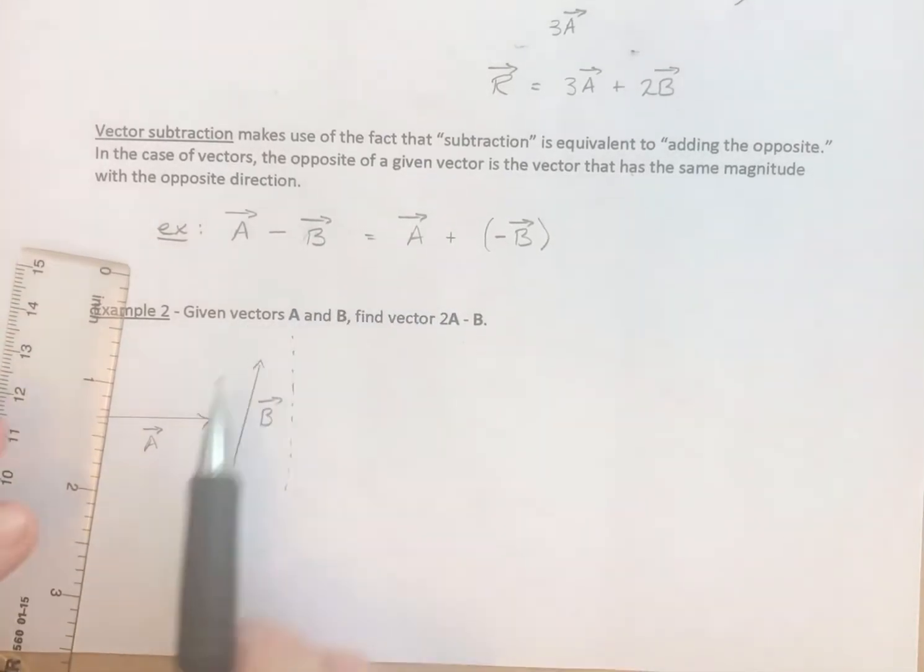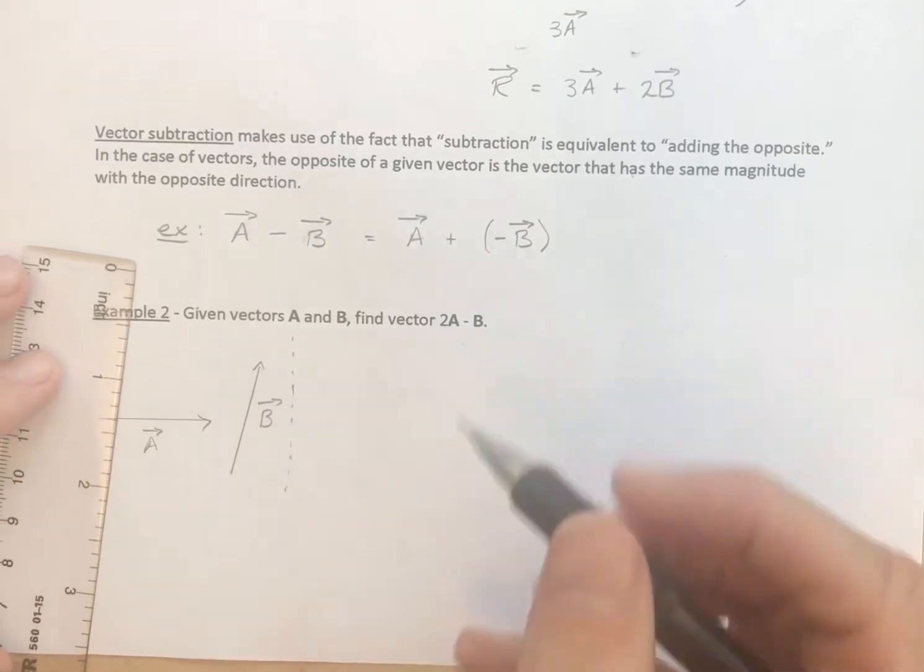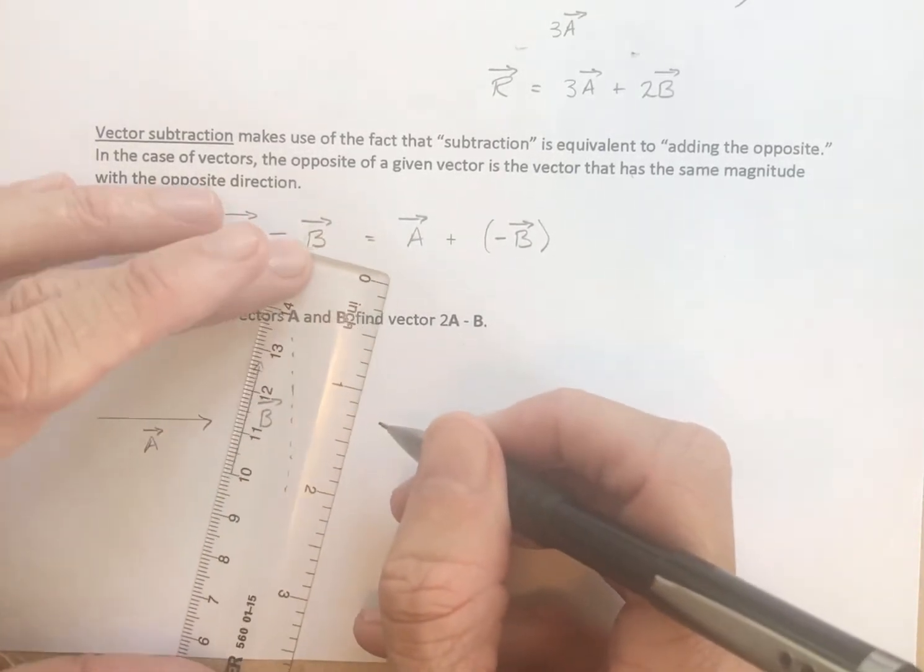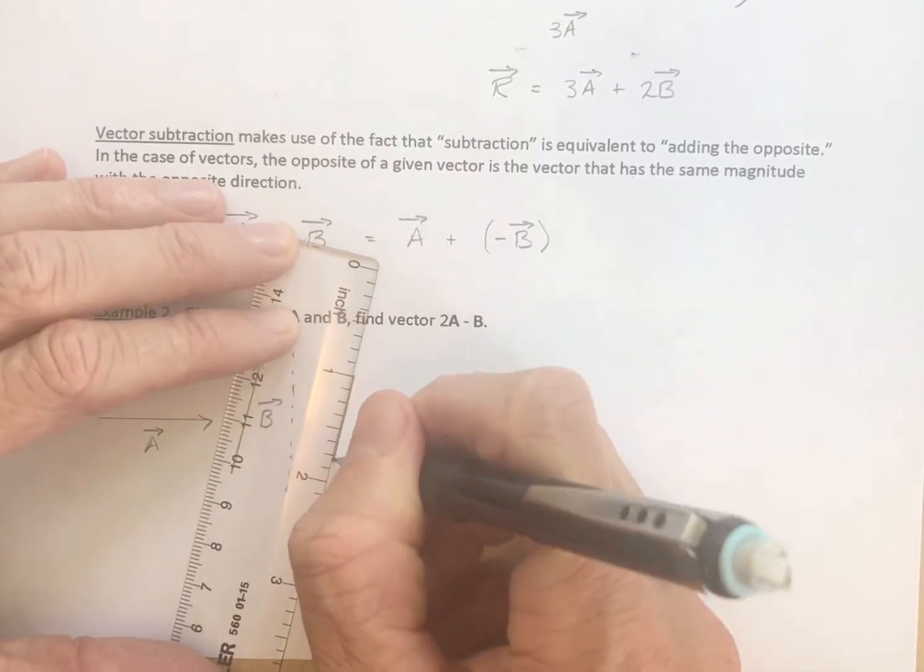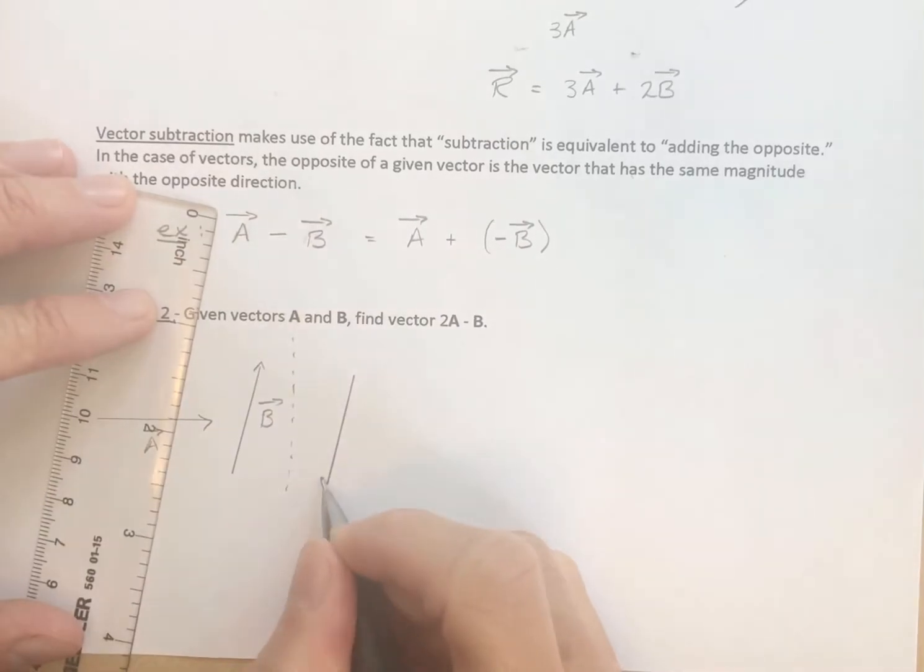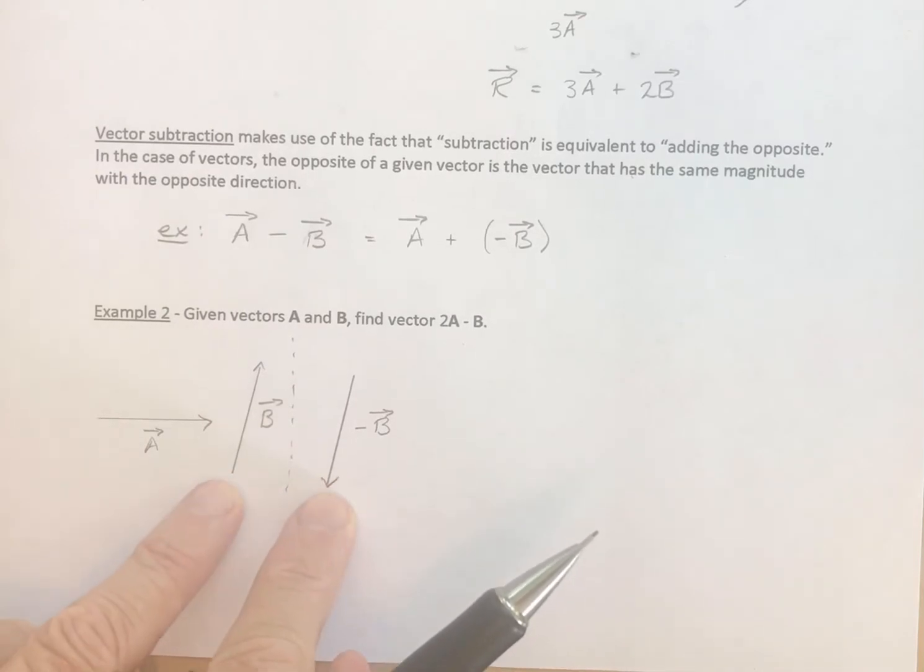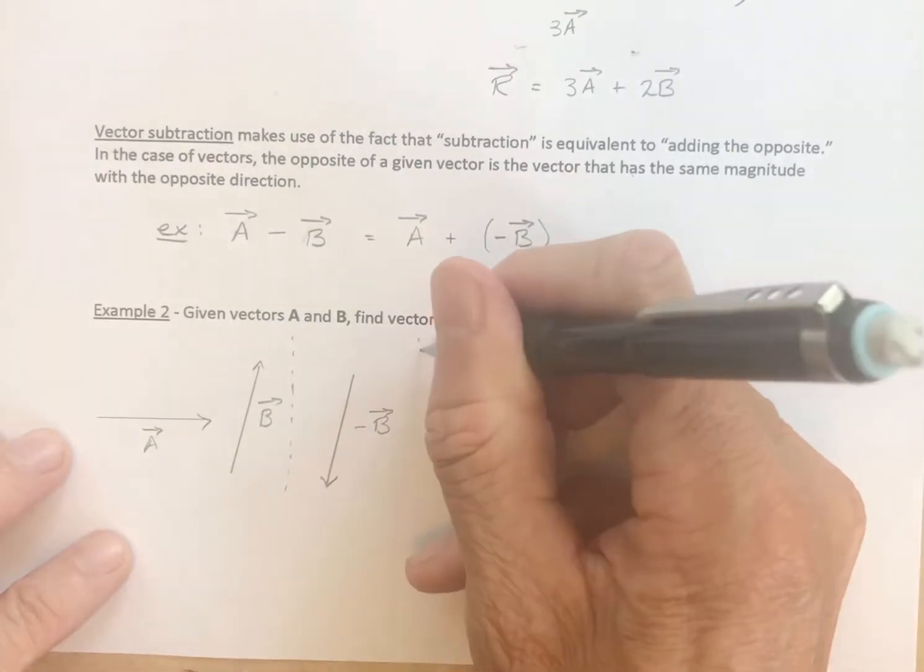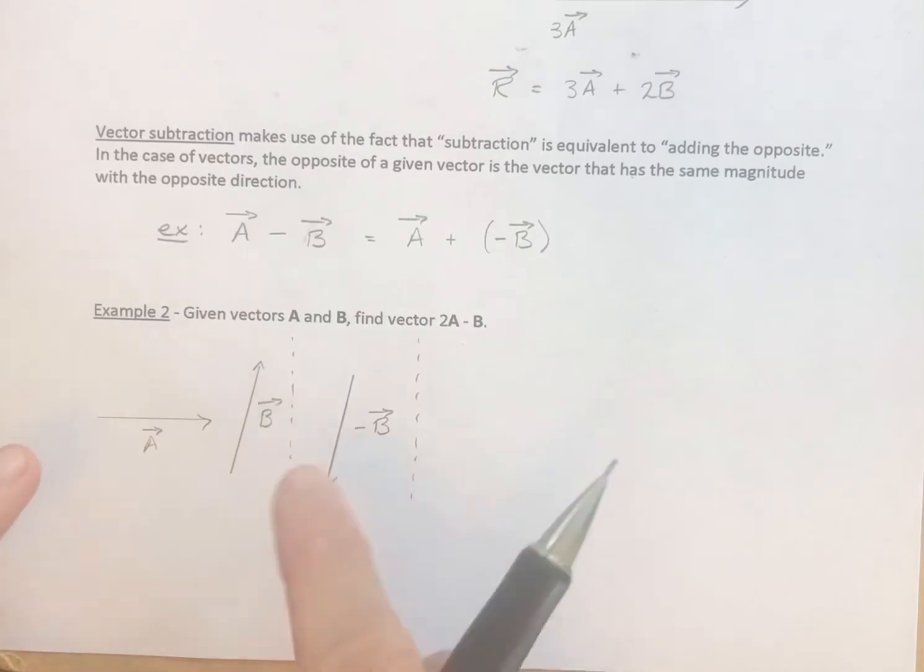So there are vectors a and b. Well, we need to come up with a vector negative b. Well, if this is b, then negative b is 1 inch in this direction. So this is the opposite of vector b. So I simply got the same magnitude, opposite direction.